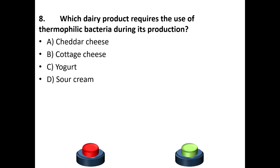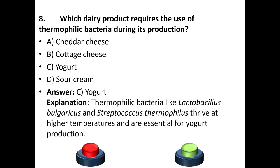Eighth question: Which dairy product requires the use of thermophilic bacteria during its production? Options: Cheddar cheese, Cottage cheese, Yogurt, Sour cream. The answer is C — Yogurt. Thermophilic bacteria like Lactobacillus bulgaricus and Streptococcus thermophilus thrive at higher temperatures and are essential for yogurt production.